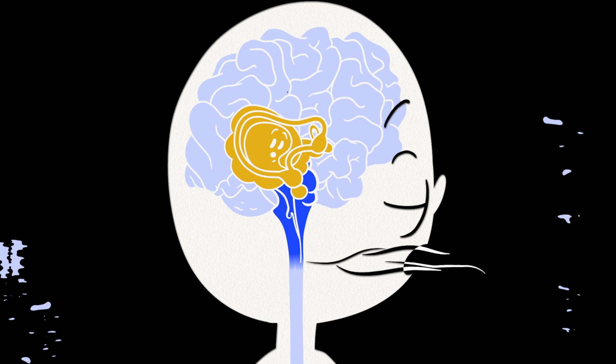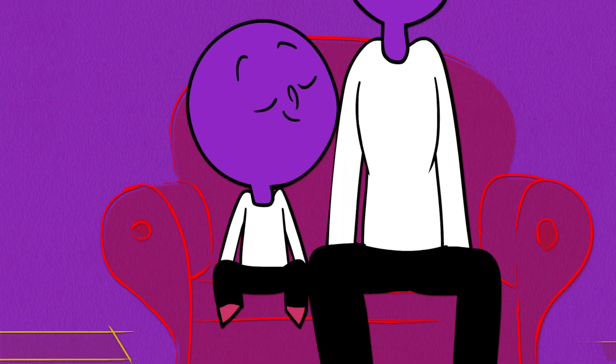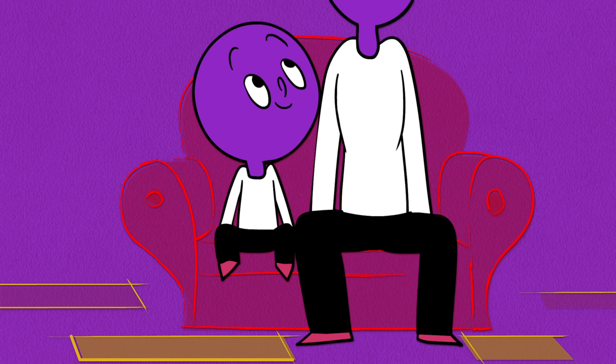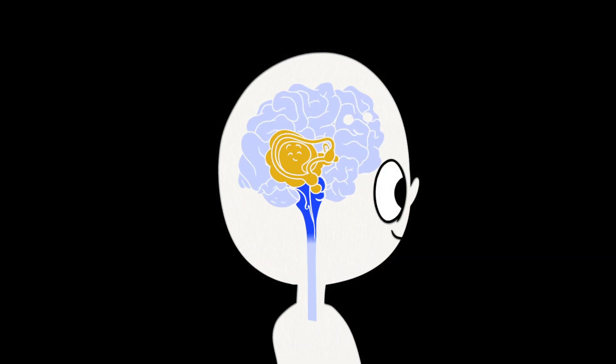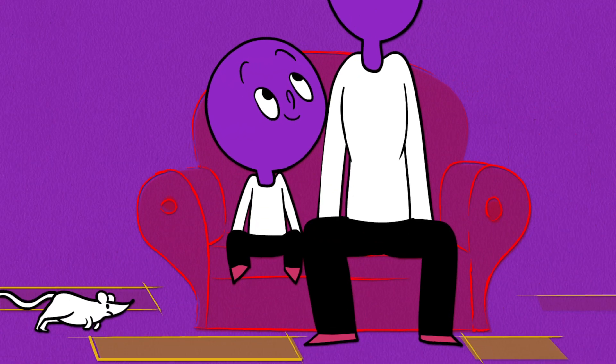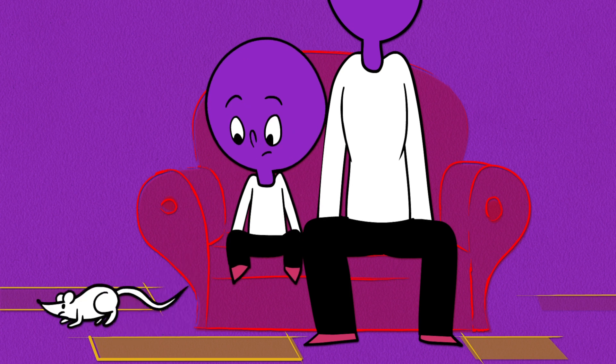You can practice putting your lid back on by breathing slowly or by spending time with someone you trust. This tells your emotional brain you are safe, and it can work with your thinking brain again. Now your whole brain can help you manage your behavior and your feelings.